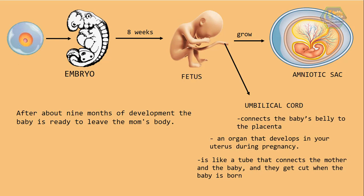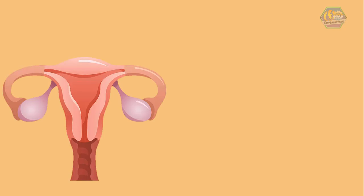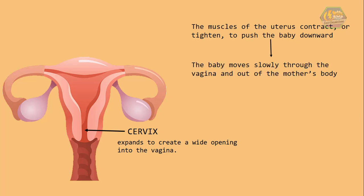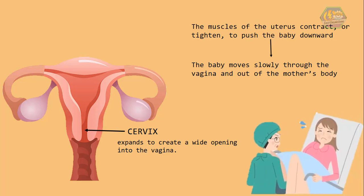After about 9 months of development, the baby is ready to leave the mom's body. The bottom end of the uterus called the cervix expands to create a wide opening into the vagina. The muscles of the uterus contract or tighten to push the baby downward, and the baby moves slowly through the vagina and out of the mother's body. Technically, the mother pushes so hard so that the baby can come out, and it's very painful — it is said to be one of the most painful feelings in the world.